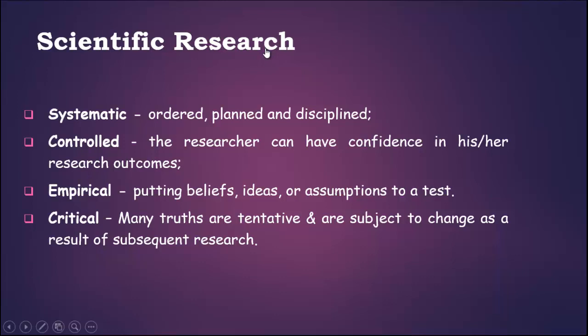Controlled means the researcher can have confidence in his or her research outcomes. Empirical means the researcher is free to put his beliefs, ideas, or assumptions to a test. Critical means many truths are tentative and are subject to change as a result of subsequent research. When you start research you will criticize the work of previous researchers, but remember this criticism is always in a positive sense.